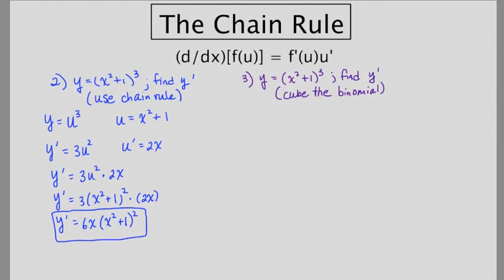For our second example, they want us to do this problem here, but they want us to cube the binomial. So it's the same problem as number 2, but they want us to have a different approach here. So what we're going to do is we're going to say that y is equal to x squared plus 1 times x squared plus 1 times x squared plus 1. So already this is becoming just a little annoying, because we have to FOIL and all that stuff.